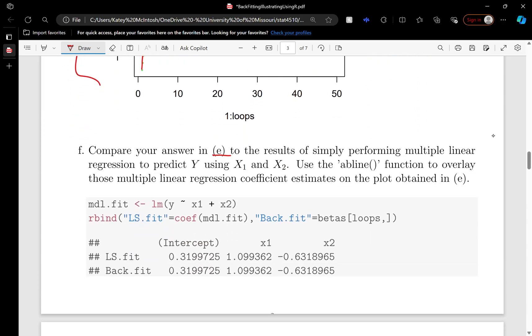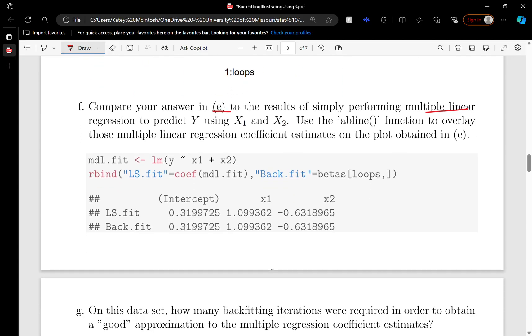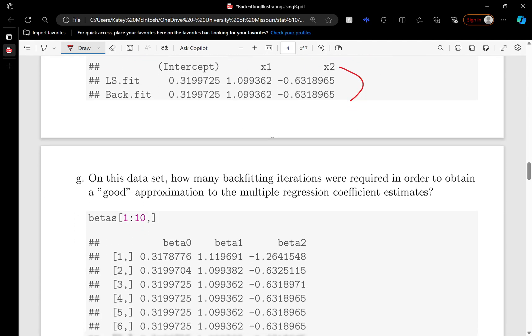Now compare your answers to multiple linear regression. We regress Y onto X1 and X2 and fit it here. Then we row bind the coefficients for multiple linear regression and the backfitting estimates. Notice they're 100% the same. The tolerance is like 26 zeros or more, and then a number. They are so close.